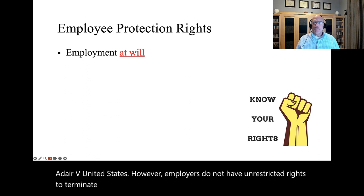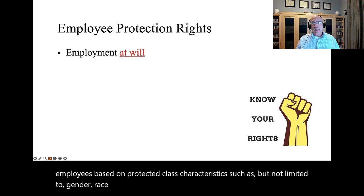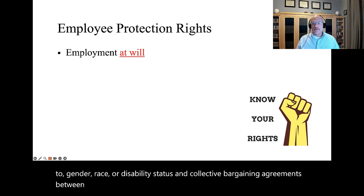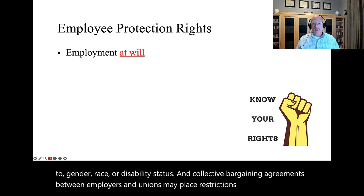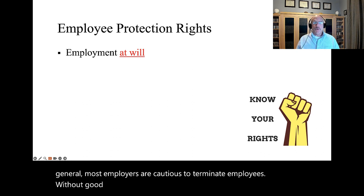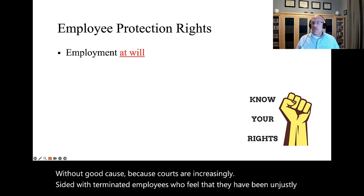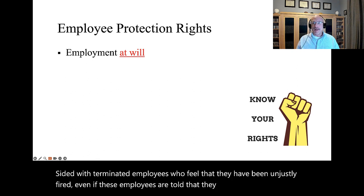For example, an employer cannot terminate employees based on protected class characteristics such as, but not limited to, gender, race, or disability status. And collective bargaining agreements between employers and unions may place restrictions on termination. In general, most employers are cautious to terminate employees without good cause, because courts are increasingly sided with terminated employees who feel that they have been unjustly fired, even if these employees are told that they are employed under the employment at will doctrine.